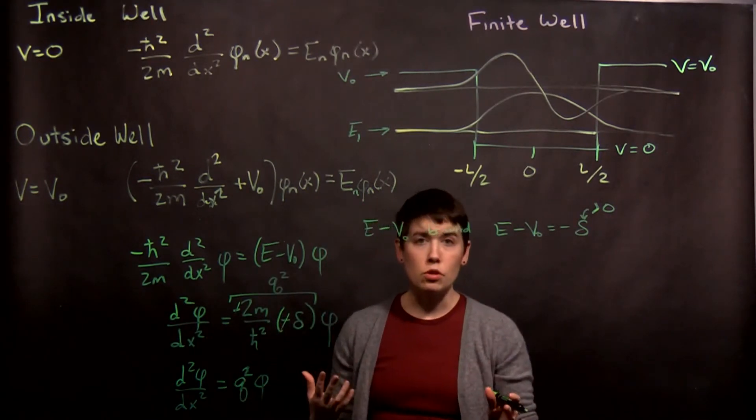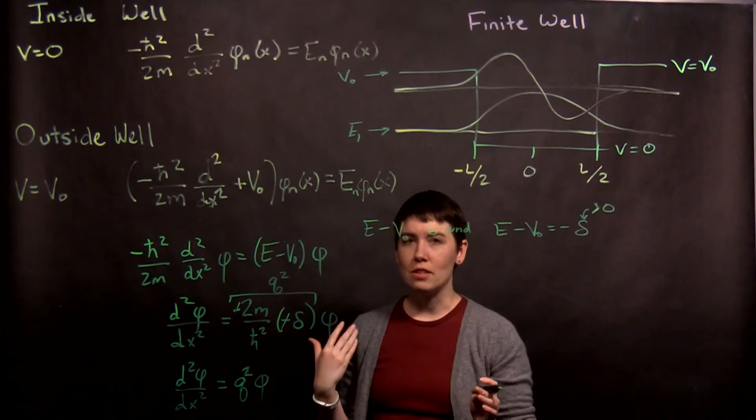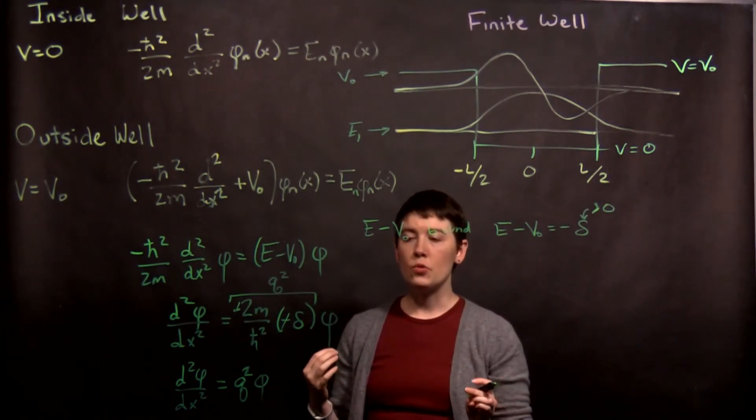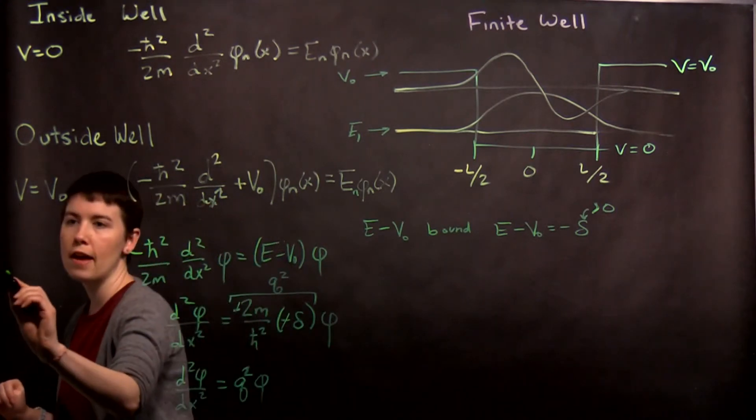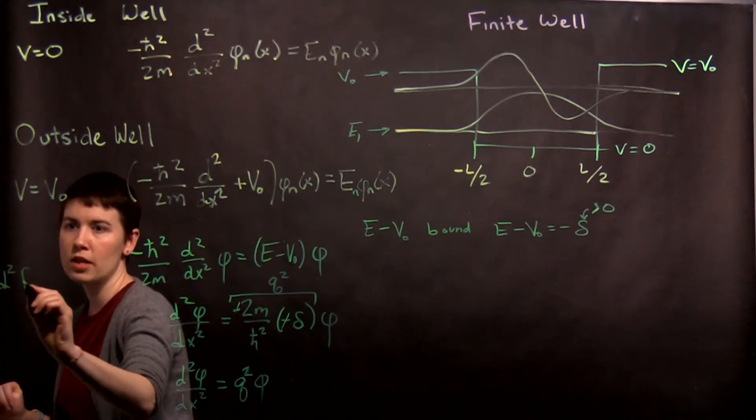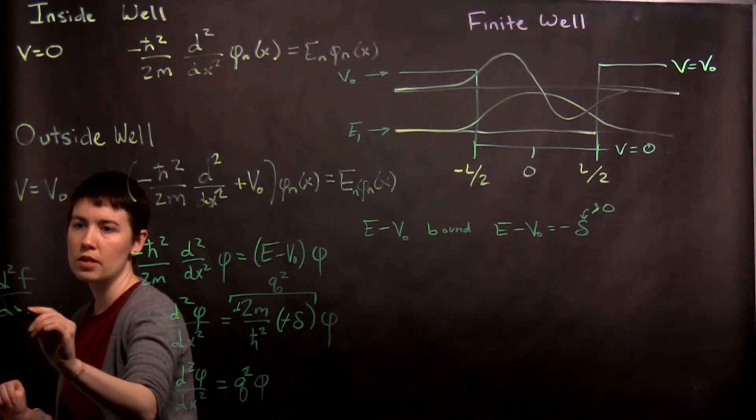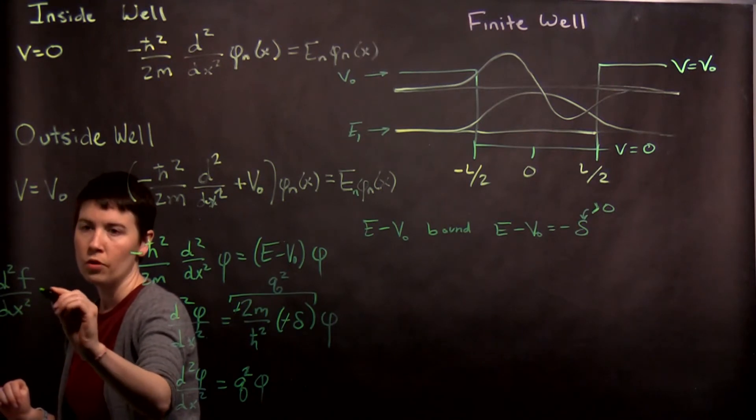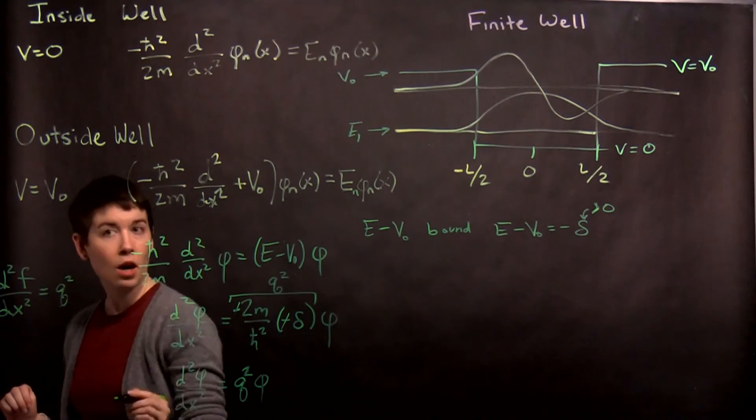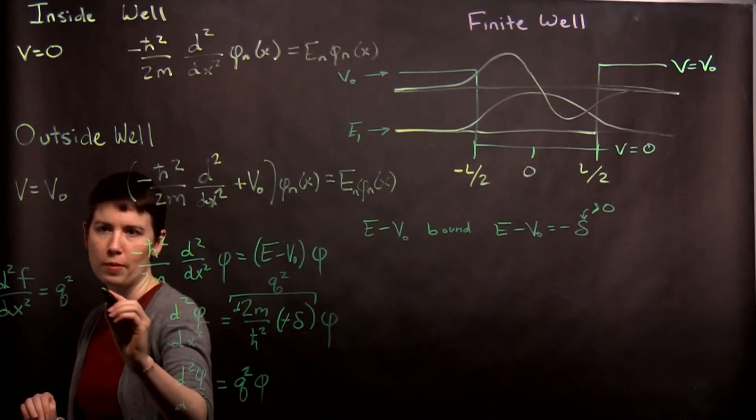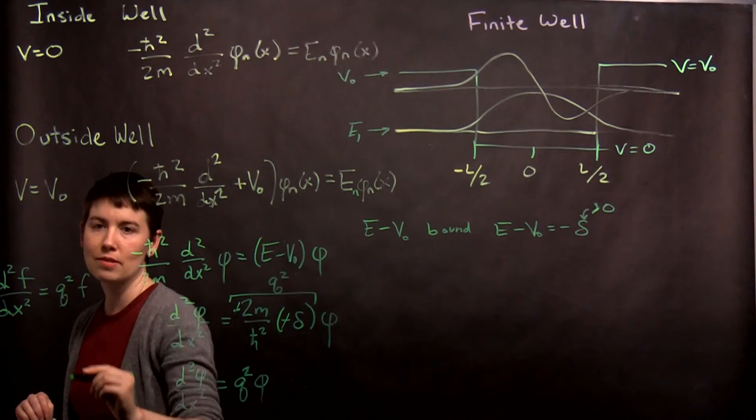Again, if differential equations are new to you, you might just find it a little bit easier to simplify this and write it in different letters. This is just saying that there's some function f, which is going to be a function of position, which when you take its second derivative, you get some constant squared, might be complex, but don't worry too much about that, times the function itself.